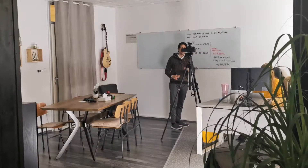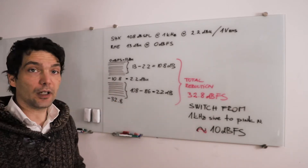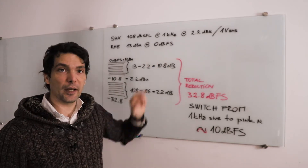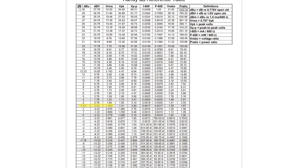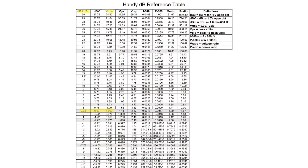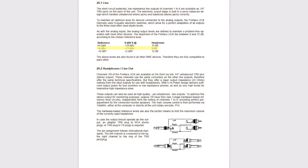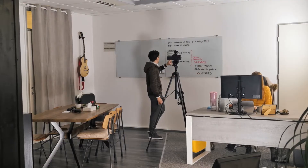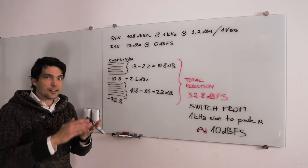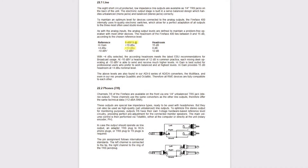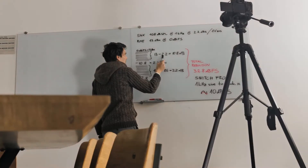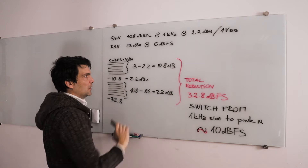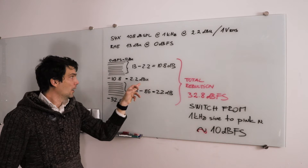Now let's dive into the math. To set your headphones to K-metering, here is the math required when using an RME interface — if you have something else, find this information from your booklets. The S4X is 108 dB SPL at 1 kHz, which corresponds to 2.2 dBU unterminated at 1 V RMS. The RME produces 13 dBU at 0 dBFS when set to 4 dBU. So at the top you have 0 dBFS where the signal starts to clip, which is 13 dBU. We need to drop down to 2.2 dBU, so 13 minus 2.2 leaves us with 10.8 dB of reduction to reach 2.2 dBU.